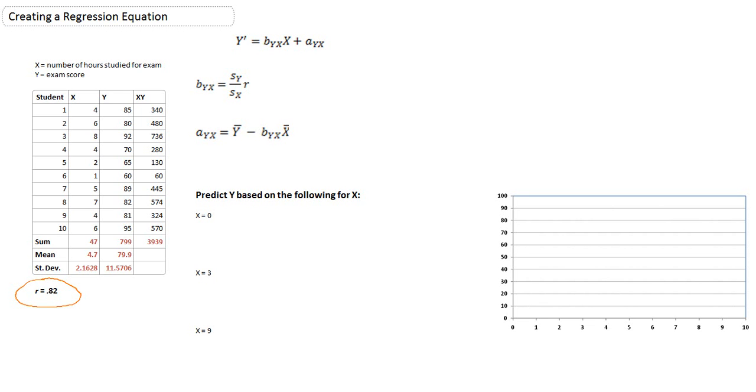In order to create our regression equation, we will be following this model, where y prime, or the predicted y, will be equal to byx, which is the slope, times x, plus ayx, ayx being our y intercept. First, what we need to do is calculate what the slope is.